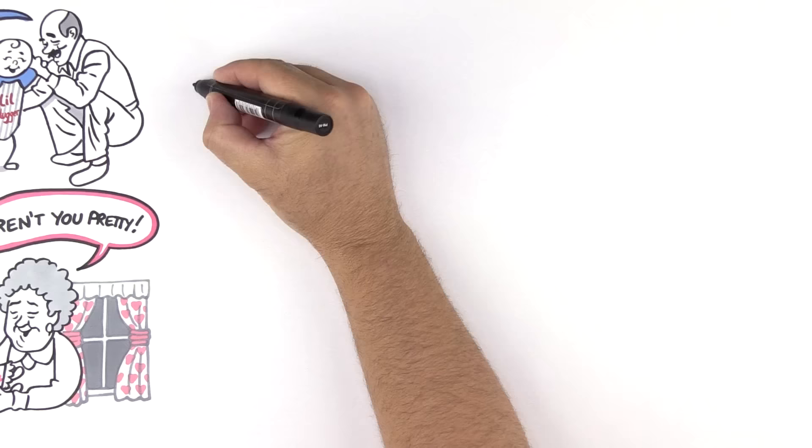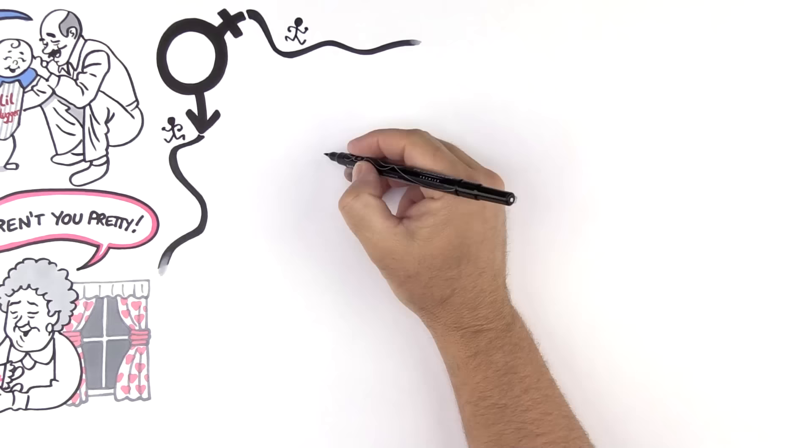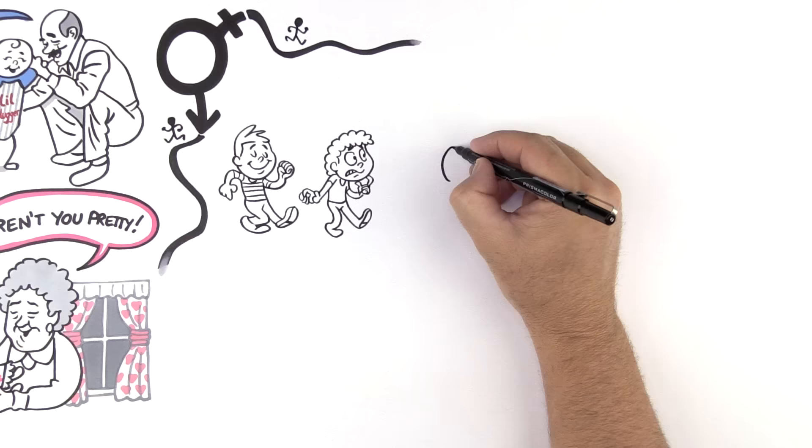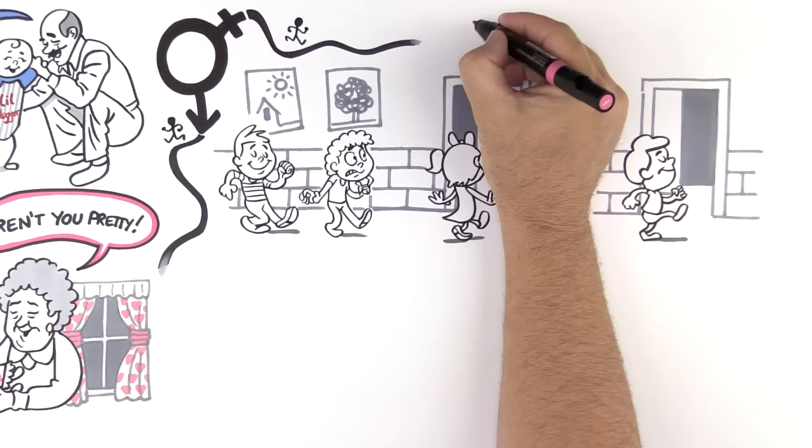For some, gender assignment and all that is associated with it is without conflict. As we mature, we carry this assigned identity as we engage with social structures like schools. Cisgender kids go into their assigned boys or girls bathroom without hesitation. Walking into a different bathroom is met with redirection.